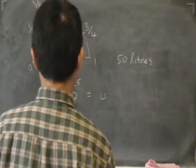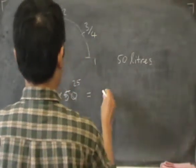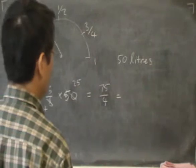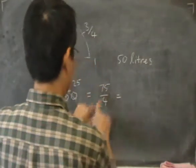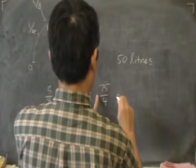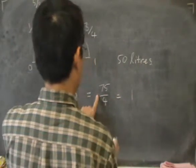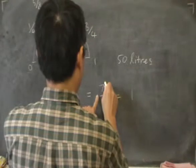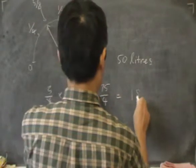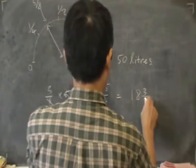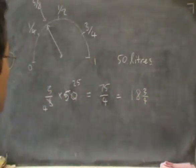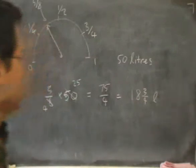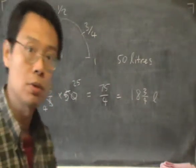So on top, I'll have 75. At the bottom, I'll have 4. And the answer is, if I do a long division between the 7 and the 5, I'll get 1. 4 times 1 is 4. And I get the 3 there, the 8, and I get 3 quarters. So that's the answer. There is 18 and 3 quarter liters of fuel in the tank.